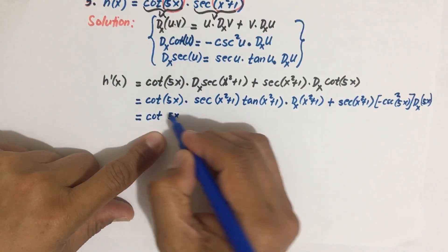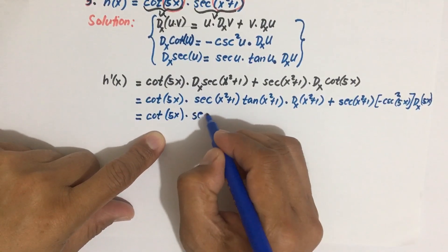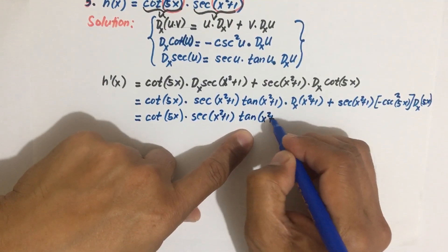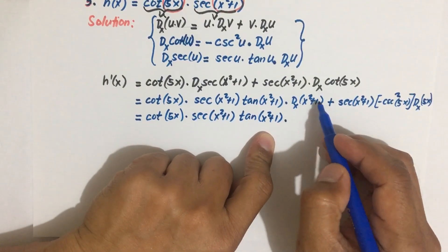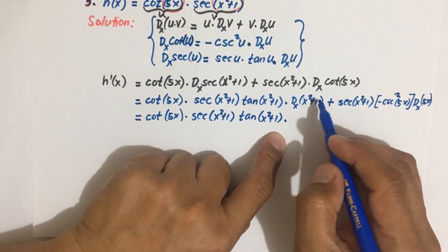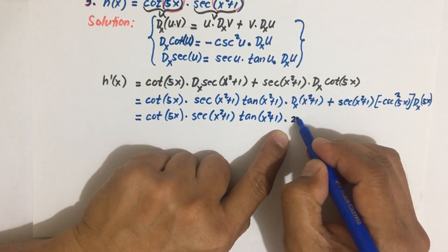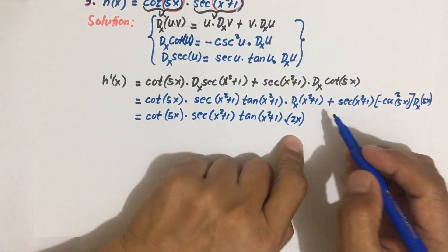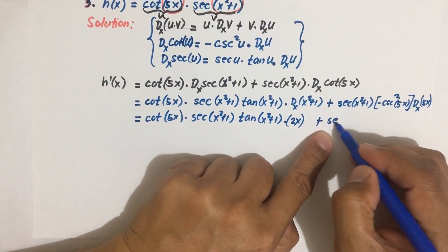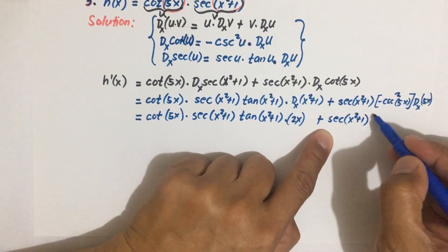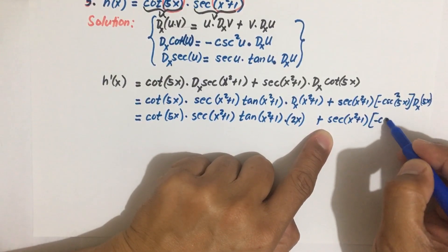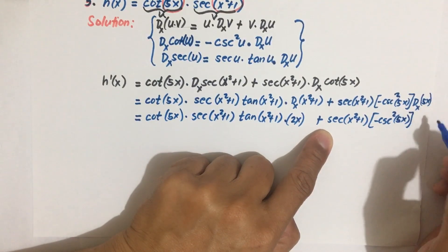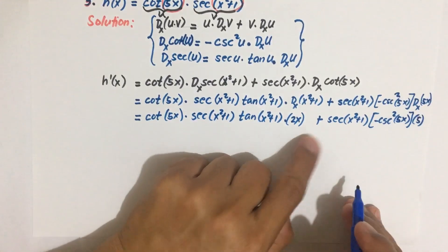Rewriting and simplifying: we have cotangent 5x times secant of (x squared plus 1) times tangent of (x squared plus 1) times the derivative of (x squared plus 1). Applying the sum and power rules, the derivative of x squared is 2x and the derivative of 1 is 0. Then we add secant of (x squared plus 1) times negative cosecant squared of 5x times the derivative of 5x, which is 5.